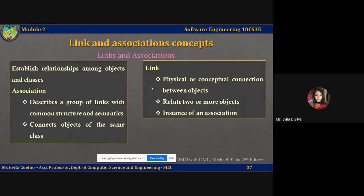Most links relate to objects, though some links can also relate three or more objects. A link is always an instance of an association. An association is a description of a group of links with common structure and common semantics.